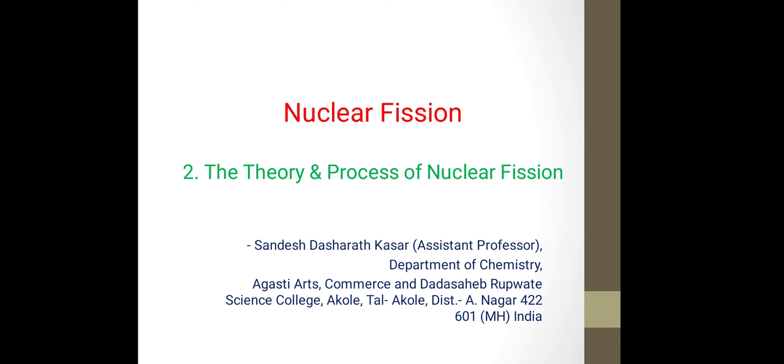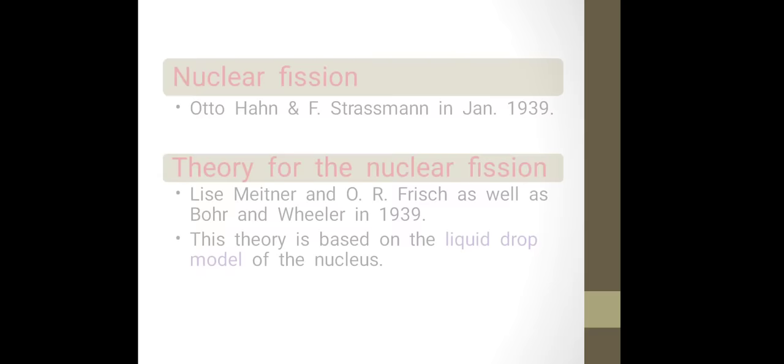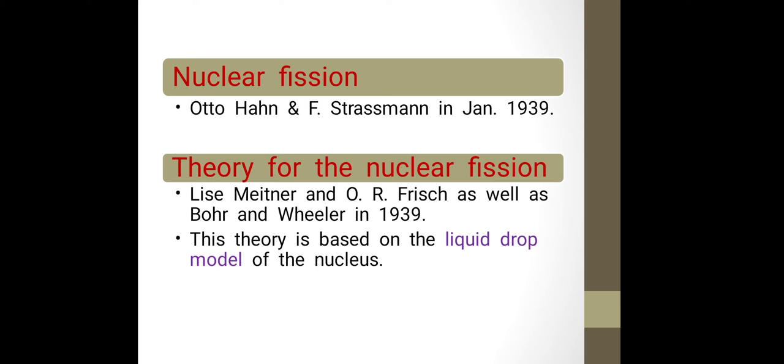In the first part, we have seen that the phenomenon nuclear fission was discovered by Otto Hahn and F. Strassman in January 1939. Otto Hahn also received a Nobel Prize for his contribution.